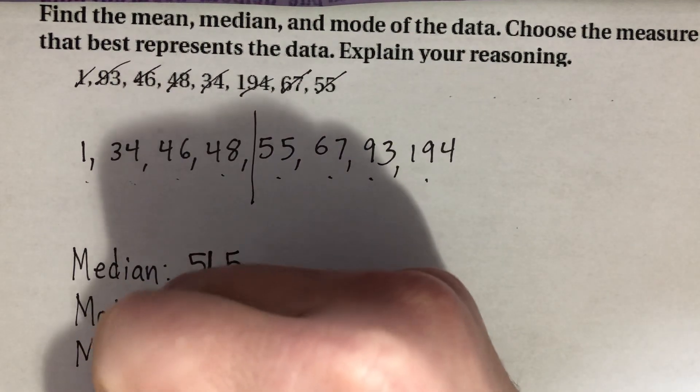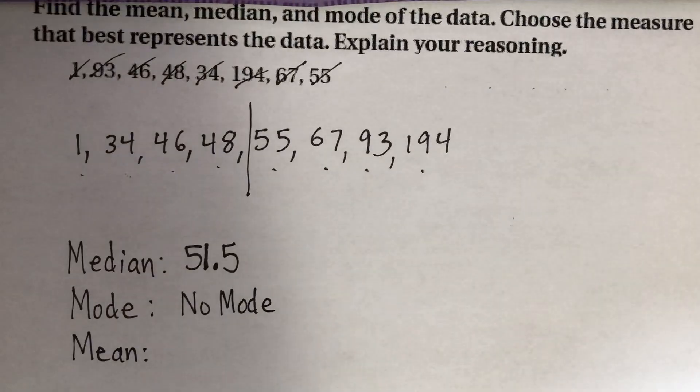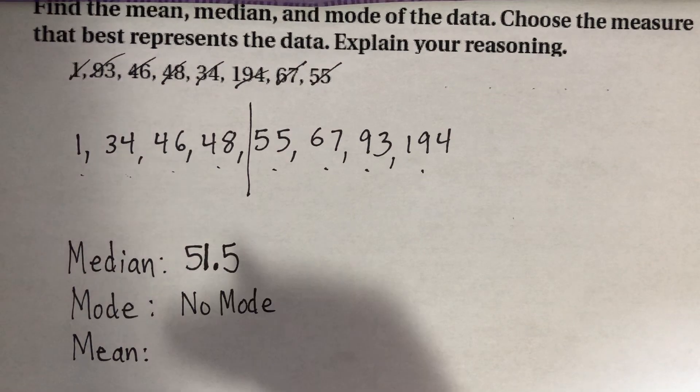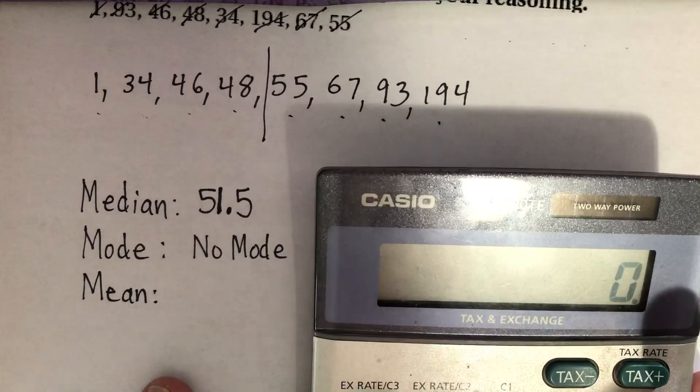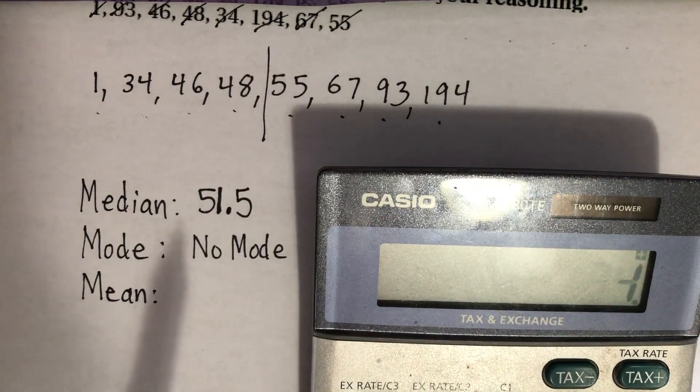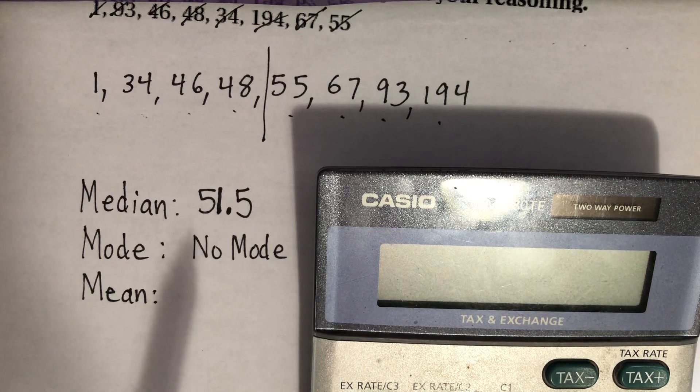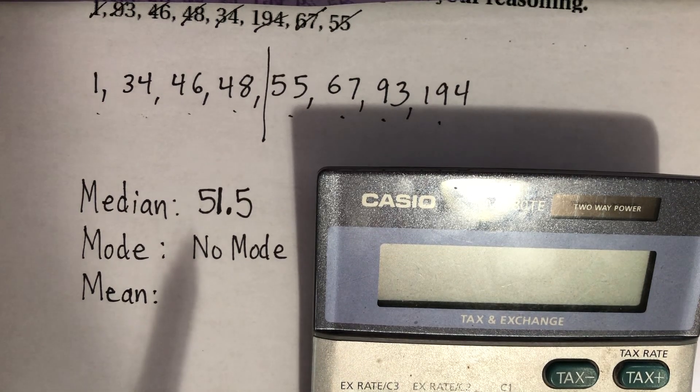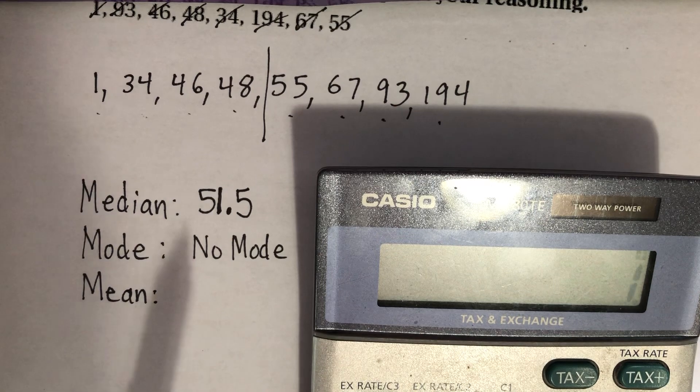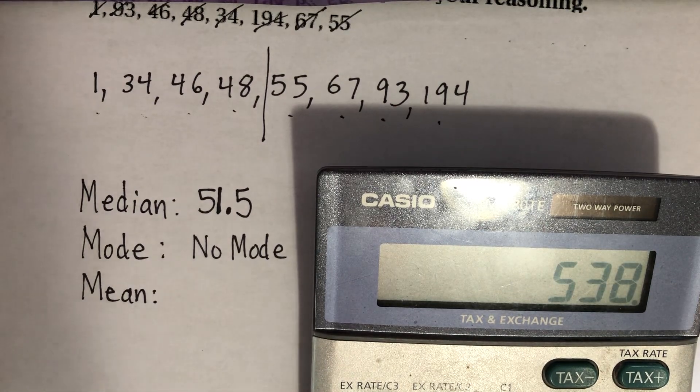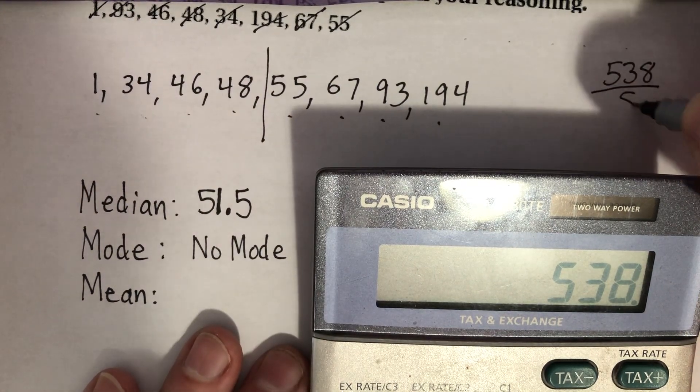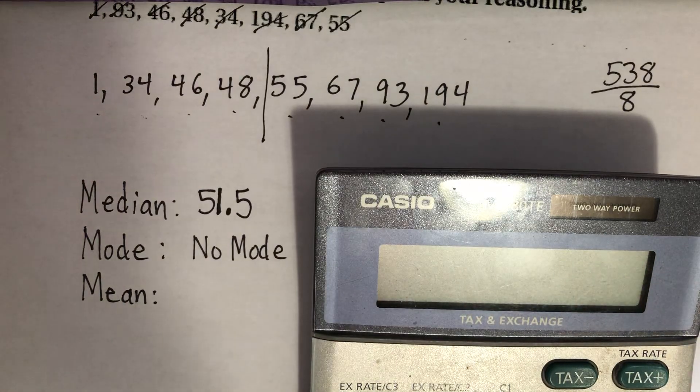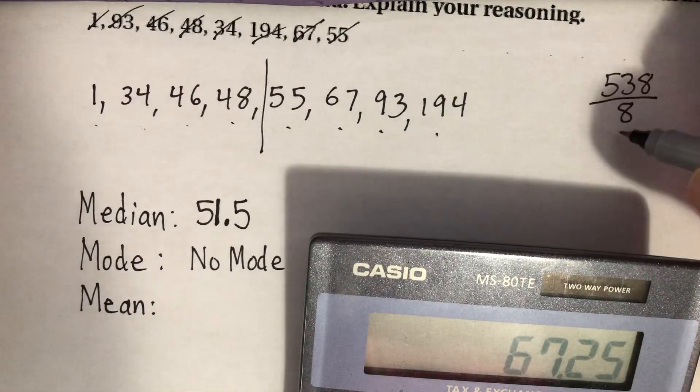Now, some people remember that mean is the one that takes the longest because they're thinking, oh, my teacher's mean for making me do that. That's a great way to remember that. So what we need to do is actually add up all these numbers. I'm going to go ahead and add those numbers up quickly. And so I see 1 plus 34 plus 46 plus 48 plus 55 plus 67 plus 93 plus 194. And I get 538. And I'm going to go ahead and write that down. And then because there are eight terms, I would need to divide that by eight. And I get 67.25.